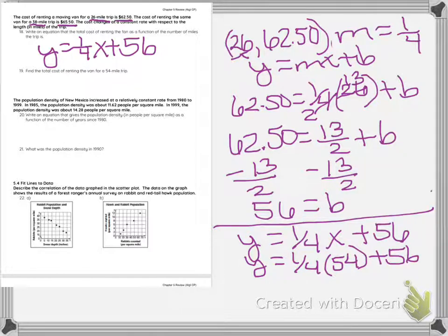So I'm going to have 1/4 times 54 plus 56, and I'm going to reduce this by 2, and I get 2 on the bottom here, and I get 27 here.